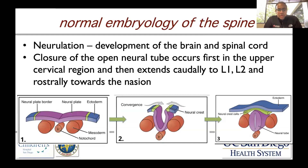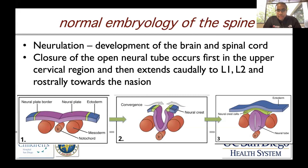When we talk about normal embryology of the spine, the most important process is neurulation, which is really the development of the brain and spinal cord. When you talk about closure of the open neural tube, it typically happens first in the upper cervical region, then extends down to L1-L2, and then comes back rostrally towards the nasion. These slides show the general embryology of this area.